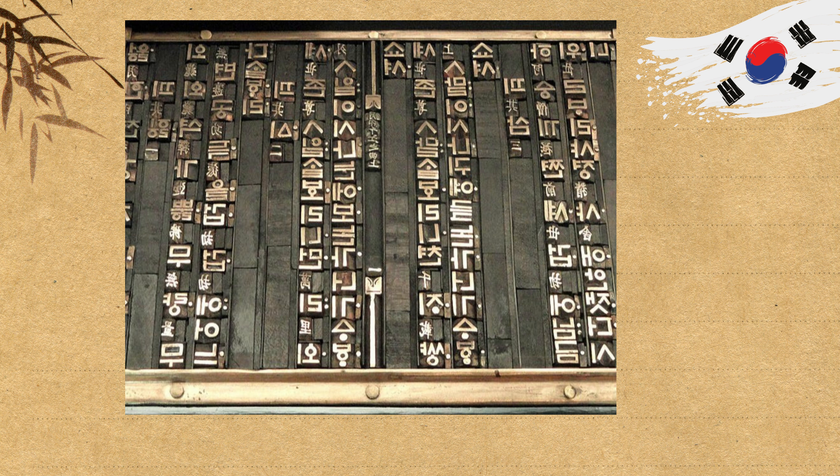Although woodblock printing would remain dominant in China for centuries, the idea behind movable type gradually made its way to Korea. By the 13th century, the Koreans had adapted and further innovated this concept by introducing metal as a material for movable type. This refinement made printing even more durable and efficient.